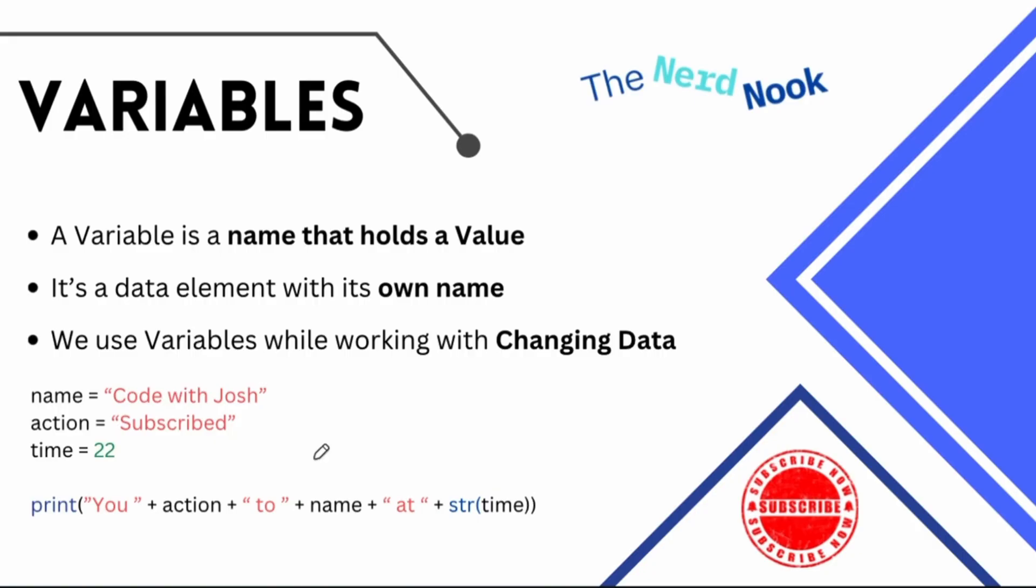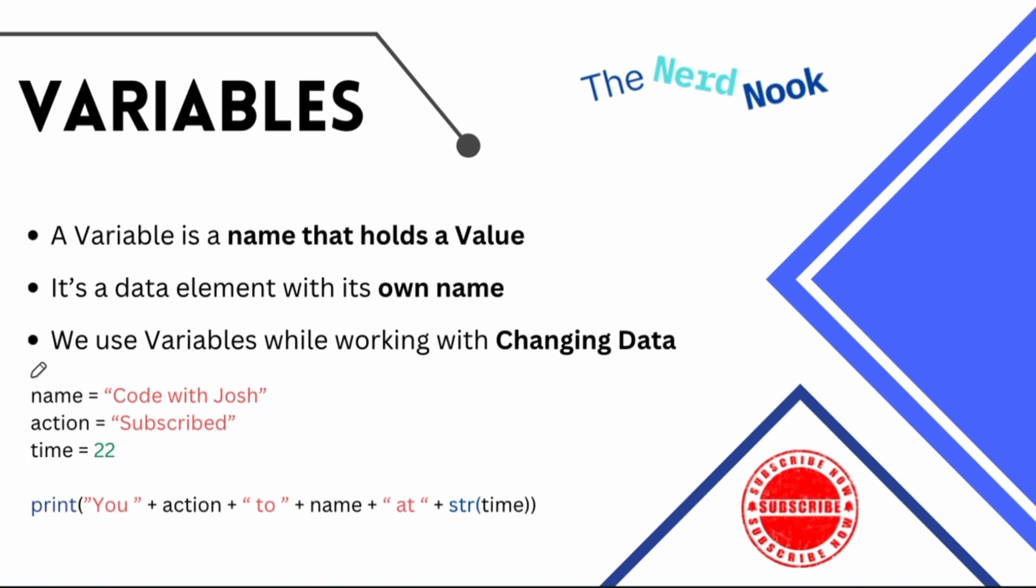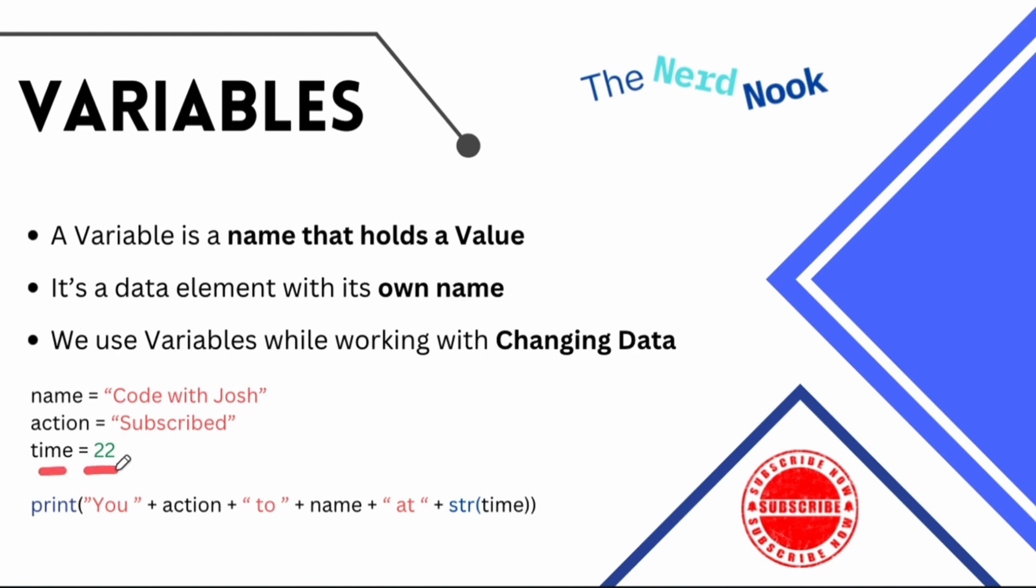So long story short, guys, a variable is literally a word or a name that holds a value. That's it. It's a data element that has its own name and we use variables while working with data that can change. So potentially any data in the future that could change, we want to use a variable because we can update the value of that variable. If you take a look here, I have created three variables. Name equals code with Josh. That's this guy. Action equals subscribed because I hope you are subscribed. And lastly, time equals 22.